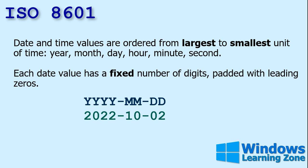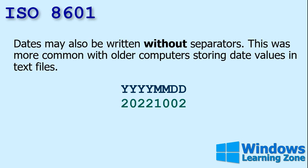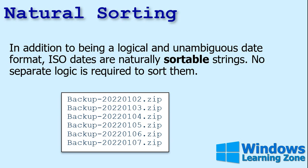It's the most logical way to format a date. Date and time values are ordered from the largest to the smallest unit: year, month, day, hour, minute, second. Each date value has a fixed number of digits padded with a leading zero, so you'll never see 2022-1-2 — it's always 01-02. Dates may also be written without separators, which was more common in older computers using text files. In addition to being an unambiguous format, ISO dates are naturally sortable strings, so you don't need any special logic to sort files that use these as backup file names.